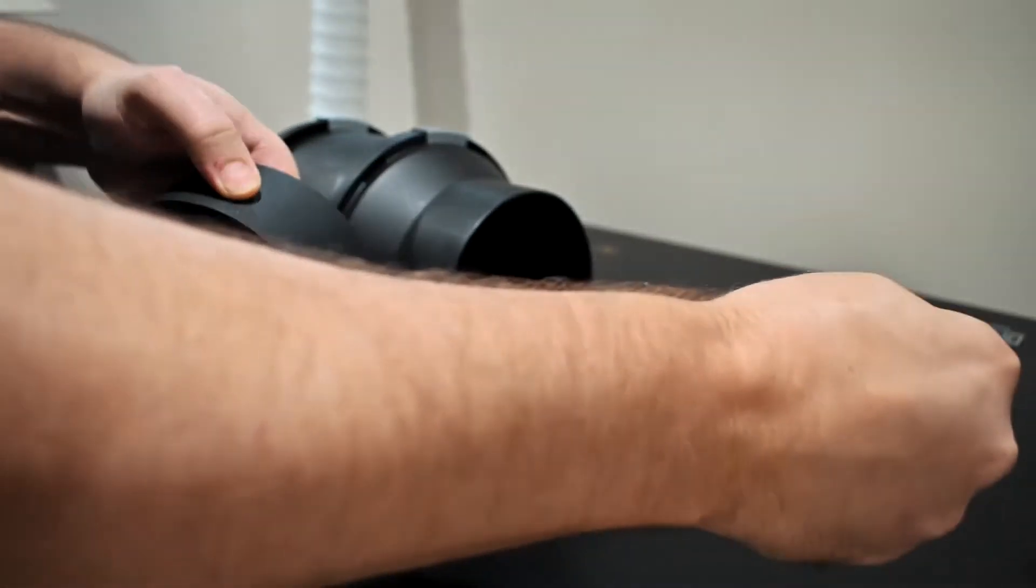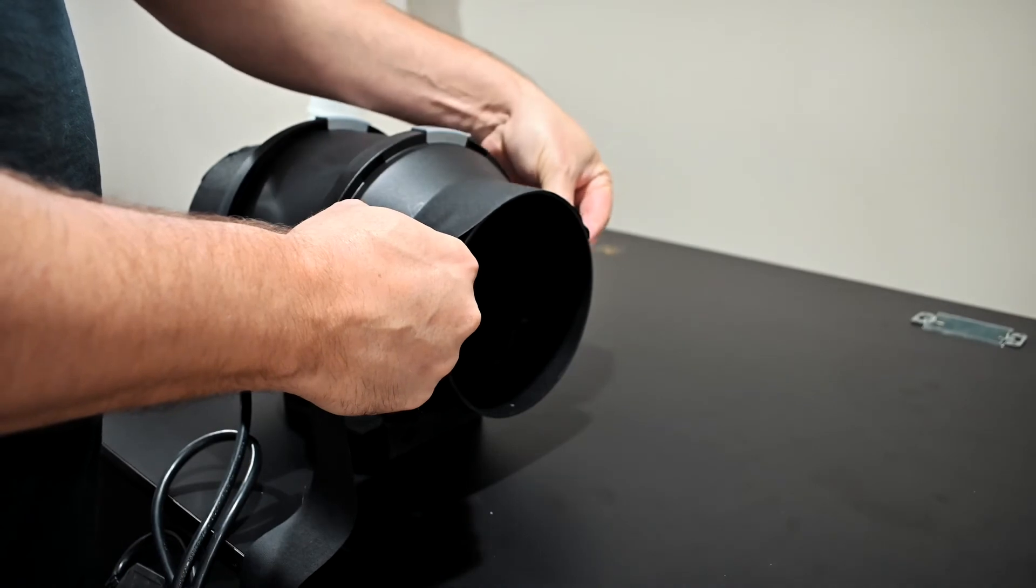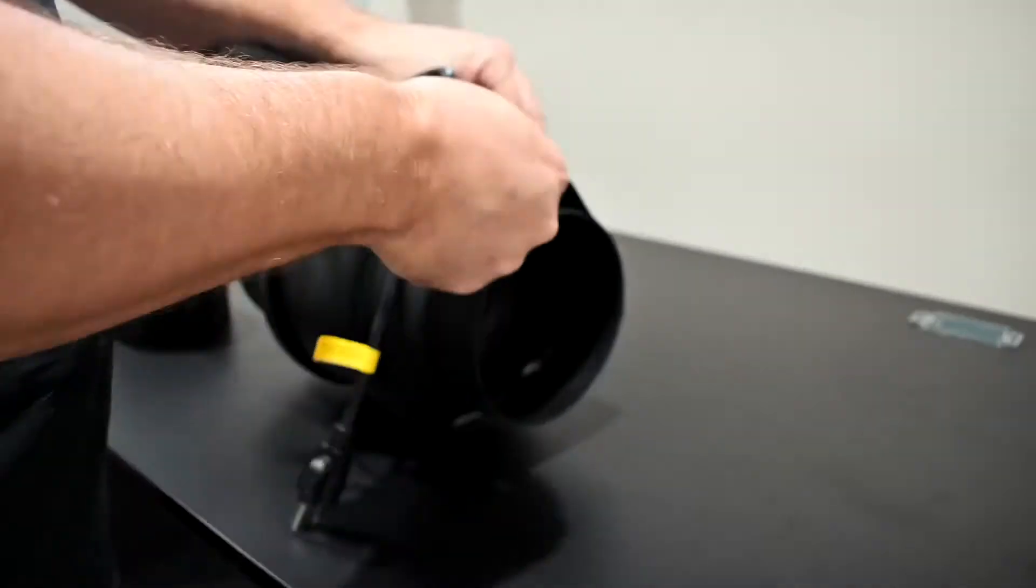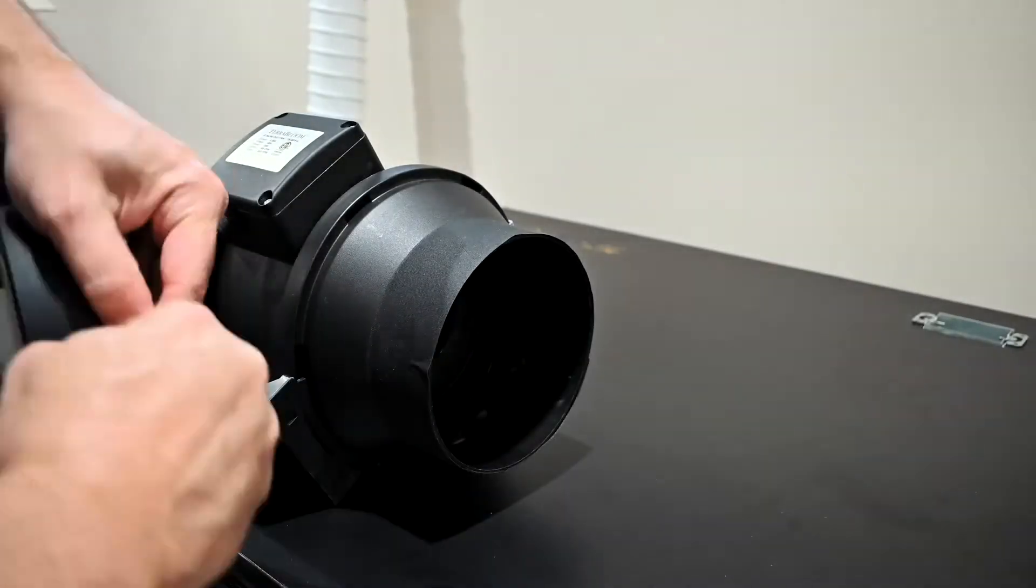I needed to adapt the 6 inch hose size to the 4 inch hose I am using for the big fan. I used gaffer tape to make the 6 to 4 inch reducers I bought fit more snugly.